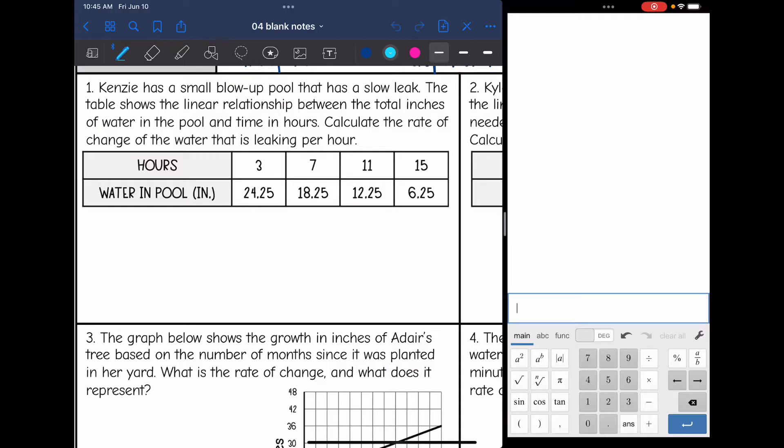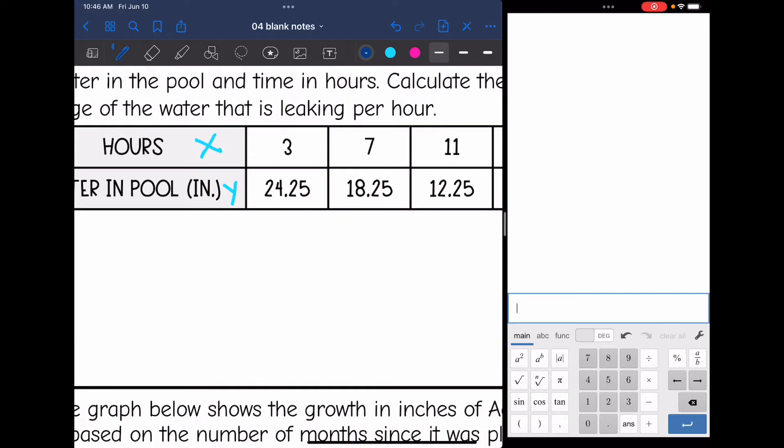So first thing I want to do is label my x1, y1, x2, and y2. Hours would be the independent x because that number of hours determines the dependent variable water in pool. So x is the number of hours and y is the amount of water in the pool. So now I know what x and y are, so I can choose two points to label x1, y1, x2, and y2. I'm just going to use the first two.